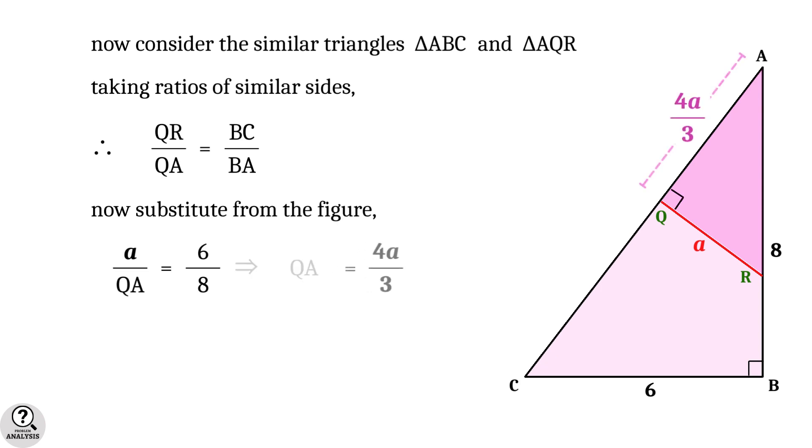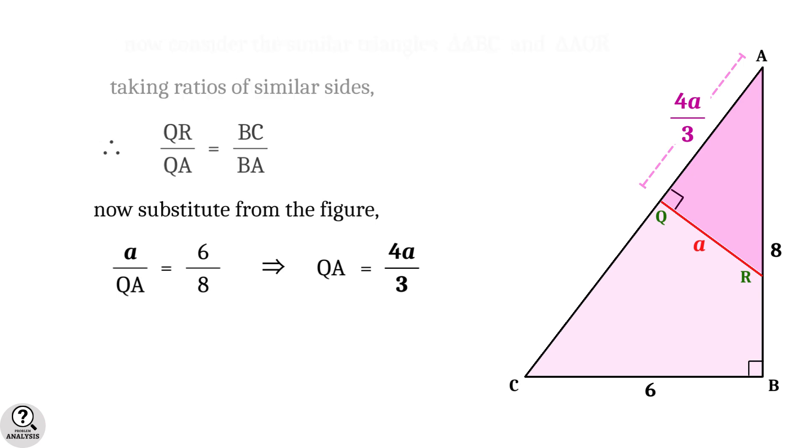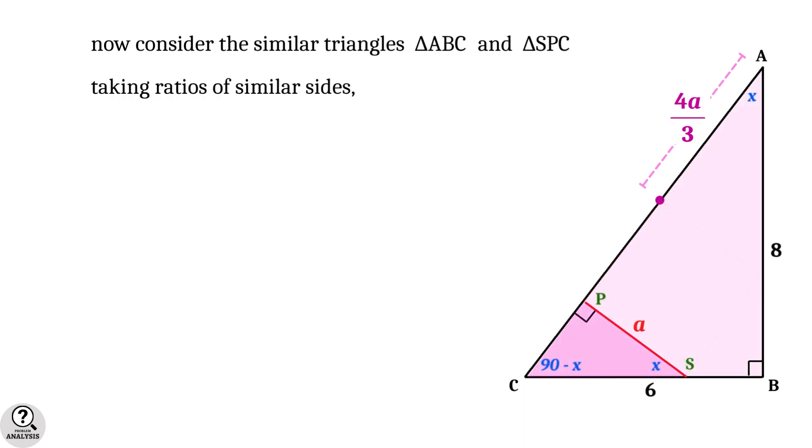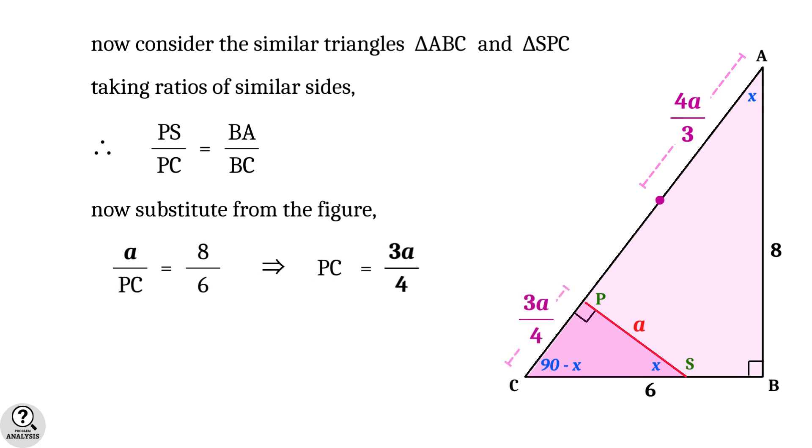Now consider the similar triangles: triangle ABC and triangle SPC. Taking the ratios of similar sides, we get PS by PC equal to BA by BC. Substitute the values from the figure: a by PC equal to 8 by 6, which implies PC equal to 3a by 4.